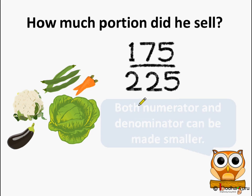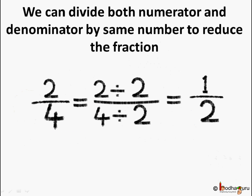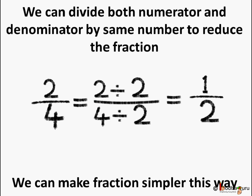How can we do that? Both the numerator and the denominator can be made smaller. We already know that to get an equivalent fraction, we generally divide both the numerator and denominator by the same number, and by doing so we reduce that fraction. For example, we have 2 by 4. If we divide both the numerator and the denominator by 2, then 2 divided by 2 is 1 and 4 divided by 2 is 2. So we get the reduced fraction which is 1 by 2. We can make the fraction simpler this way by dividing both the numerator and denominator by the same number.